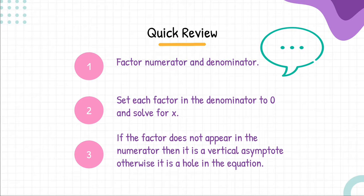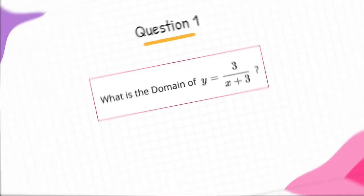3. If the factor does not appear in the numerator, then it is a vertical asymptote. Otherwise, it is a hole in the equation.